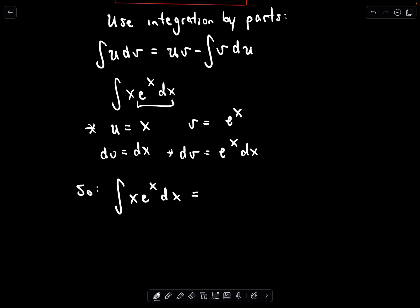So now if we fill in our formula, it says the antiderivative of xe^x dx is going to be u times v, which is x times e^x, minus the integral of v times du.